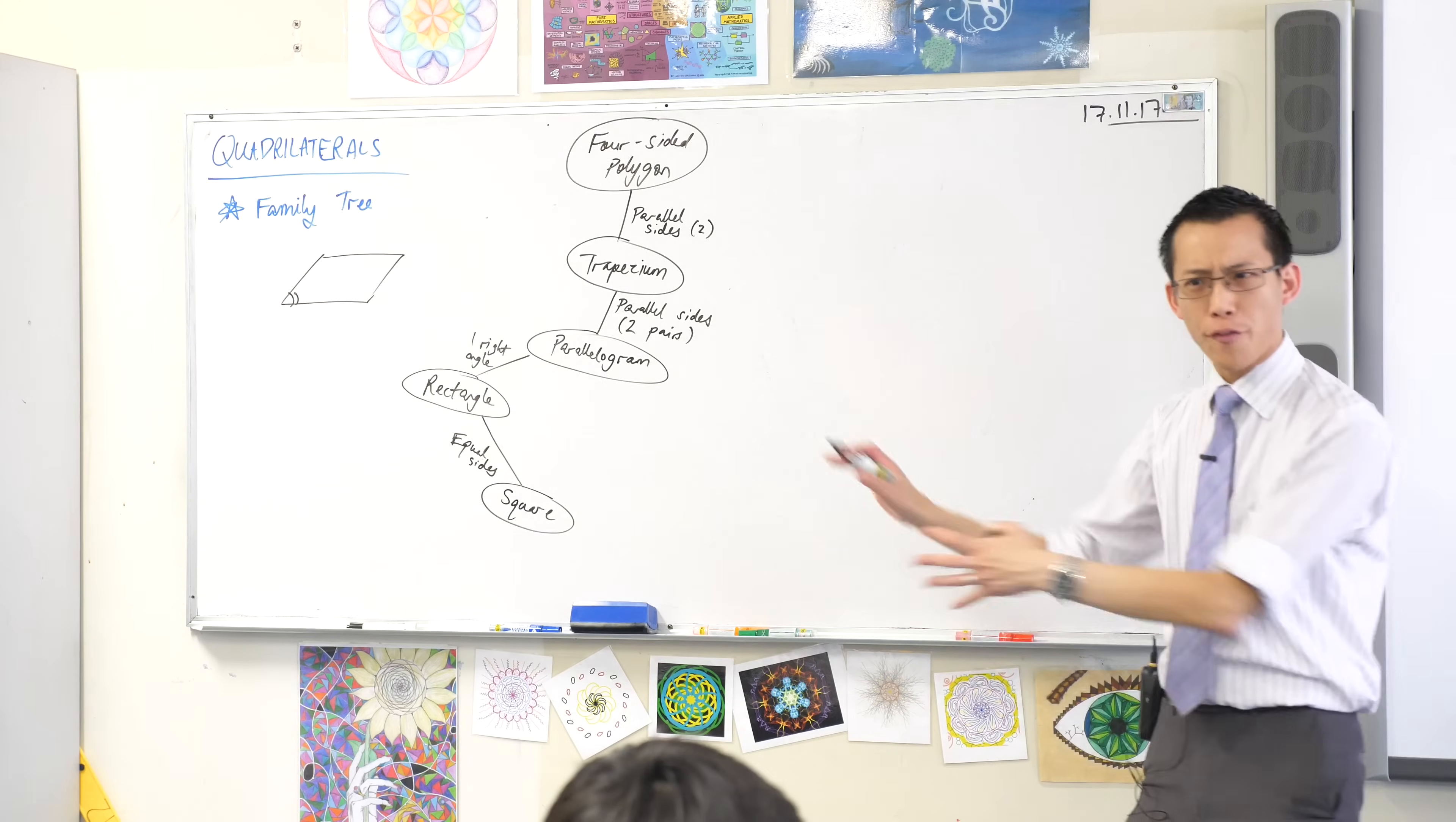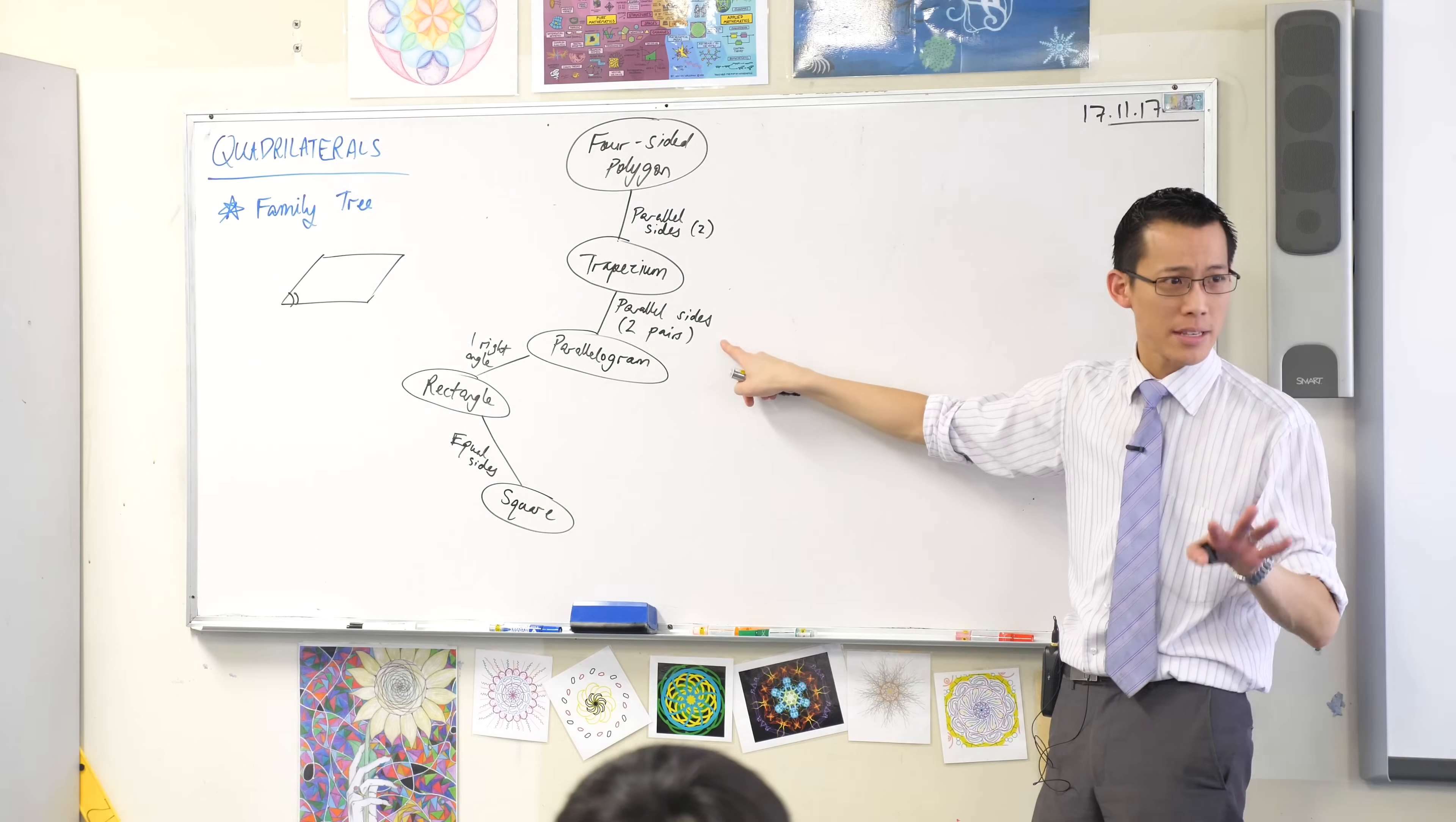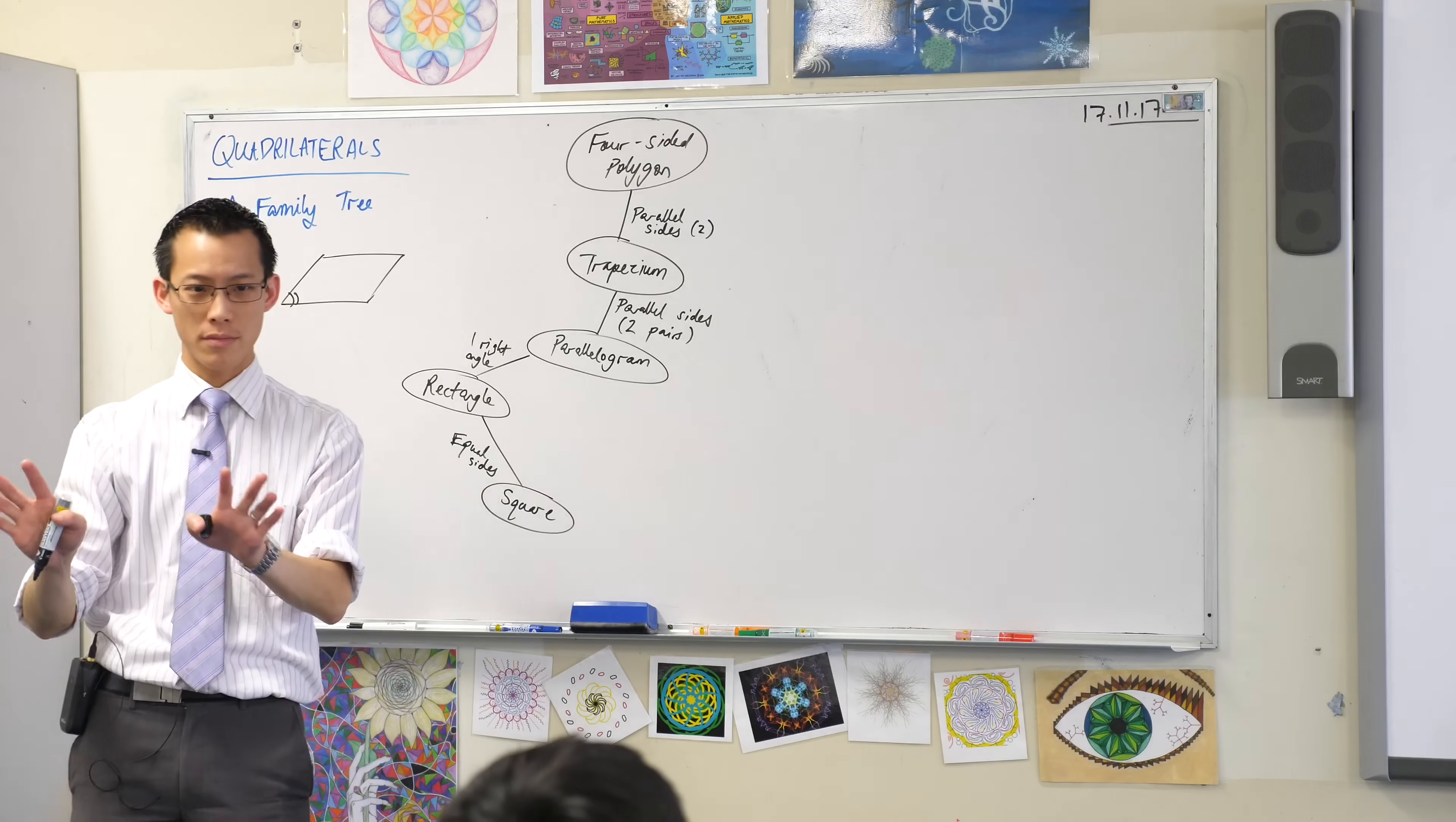And what I want you to point out, before we finish this diagonal, because it's not complete yet. Every shape down here carries with it all of the properties above. That's why it's a family tree. So for example, see the square? It's got right angles. It also has two pairs of parallel sides. Does that make sense? Look at a rectangle. It's got everything above it. It's got one pair of parallel sides, doesn't it? In fact, it's got two. Does that make sense? So every square is also a rectangle. Every rectangle is also a parallelogram. Every parallelogram is also a trapezium. You get the idea.